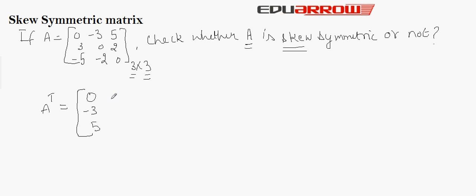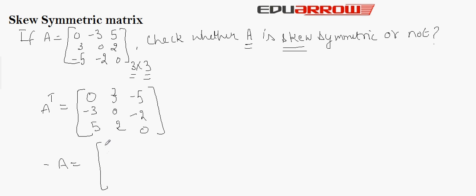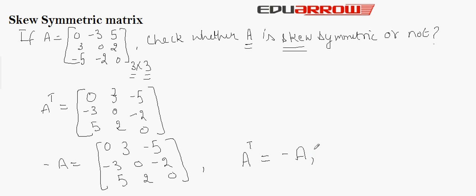The transpose comes out as: 0, minus 5, minus 2 and 0 in the appropriate positions. We then find out the negation of A, which gives values including 0, 3, minus 2, and 0. Here we see that the transpose of matrix A is equal to the negation of A. Hence it is a skew symmetric matrix.